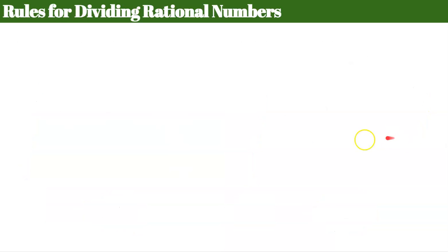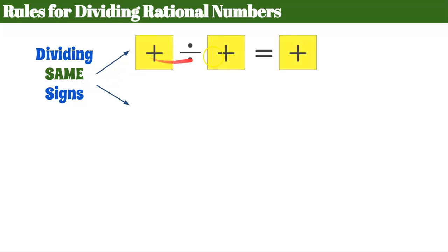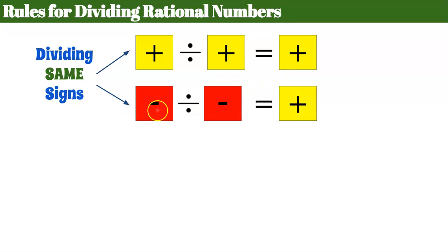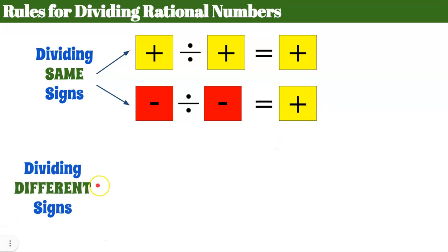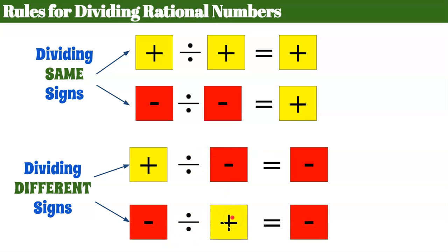Let's review our rules for dividing rational numbers. If we're dividing with the same signs, we have two rules: same sign, both positive — positive quotient; both negative — same sign — positive quotient. Then we have dividing with different signs, two rules: positive divided by a negative — negative quotient; negative divided by a positive — negative quotient. Same sign: positive quotient. Different signs: negative quotient.